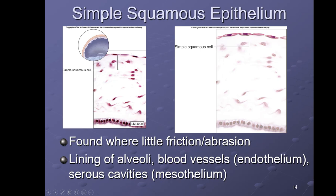This image represents an air sac in the lungs, and you can see one layer of flat cells. We will discuss this further in one of the lab videos where we'll look at more microscope slides of all of these tissue types.